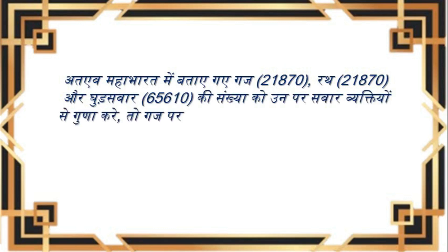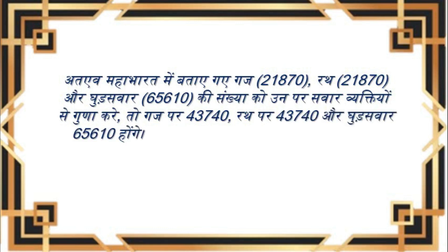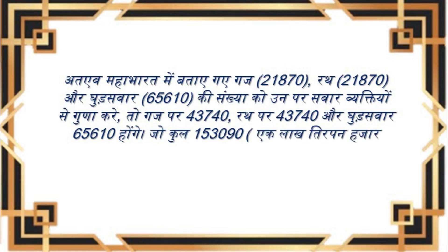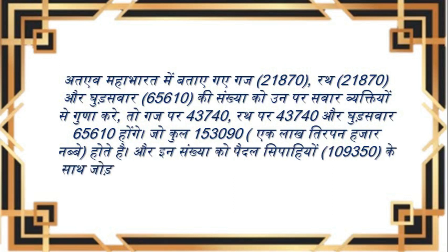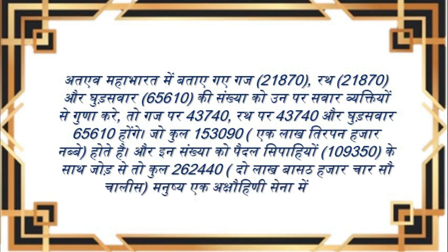अर्थात उग्रश्रवा जी ने कहा: श्रेष्ठ ब्राह्मणों, गणित के तत्वज्ञ विद्वानों ने एक अक्षोहिनी सेना में रथों की संख्या 21,870 बतलाई है। हाथियों की संख्या भी इतनी ही रहनी चाहिए। निष्पाप ब्राह्मणों, एक अक्षोहिनी में पैदल मनुष्यों की संख्या 1,09,350 जाननी चाहिए। एक अक्षोहिनी सेना में घोड़ों की ठीक-ठीक संख्या 65,610 कही गई है। महाभारत में केवल गज, रथ और घोड़ों की कुल संख्या बताई गई है।